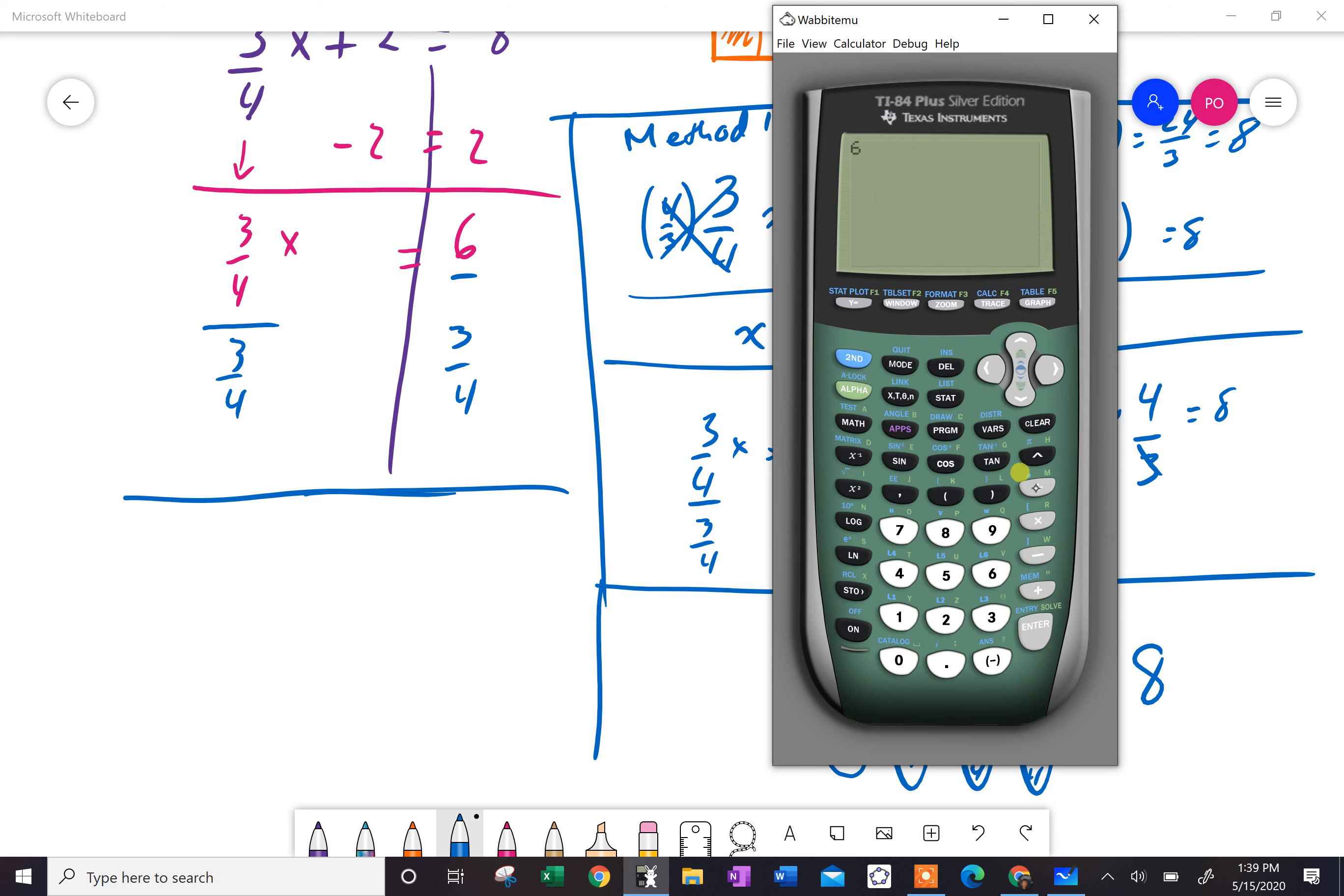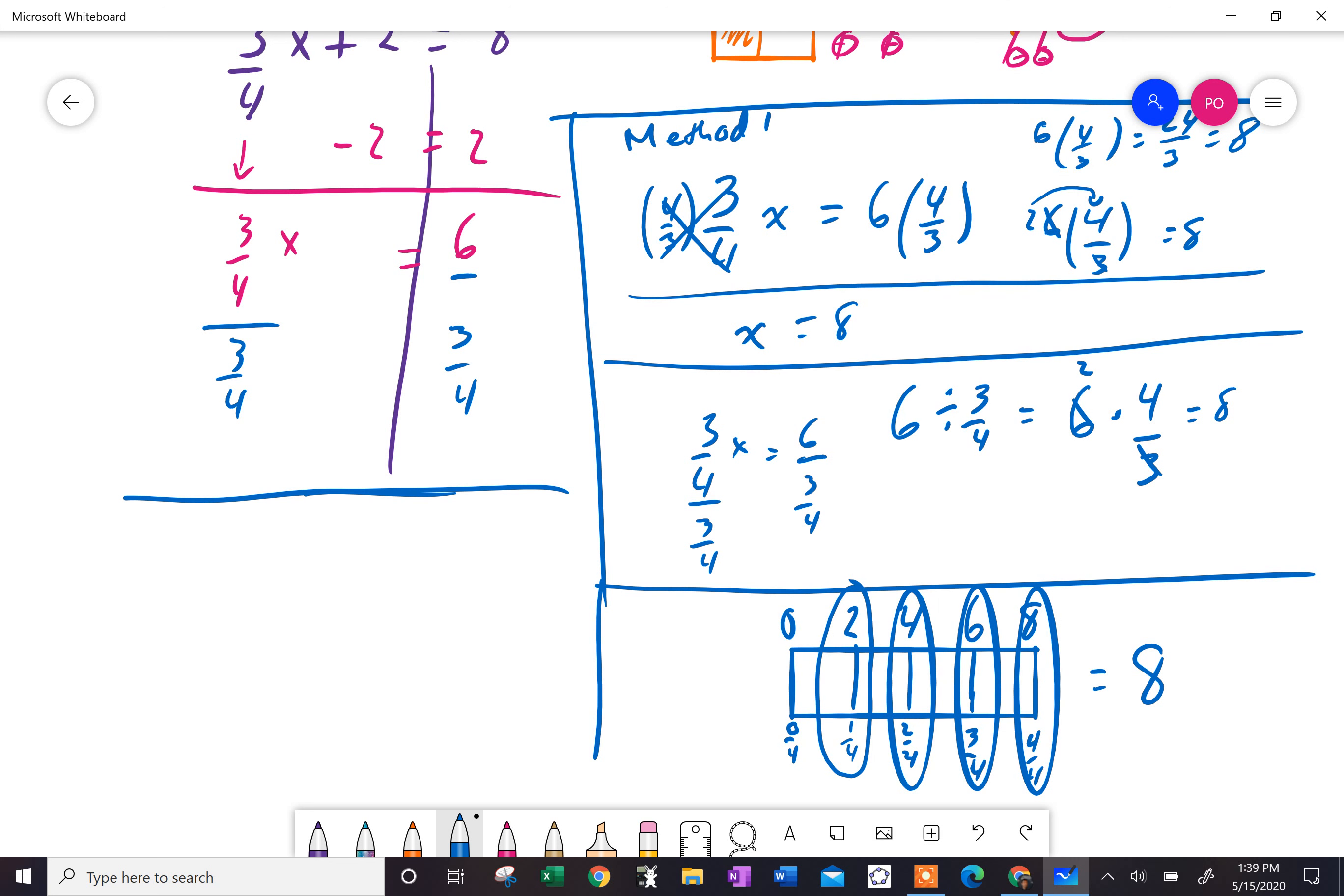Six divided by three divided by four, and you'll get eight. Or six divided by, if you know that three-quarters is really 0.75, you get eight. But the problem with using the calculator is you don't actually know what's going on. So that's it. Quick video on dividing by a fraction.